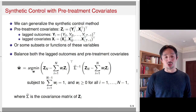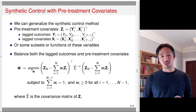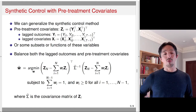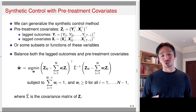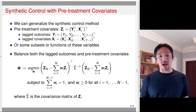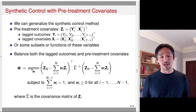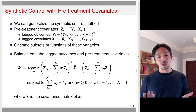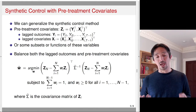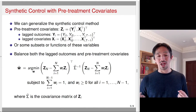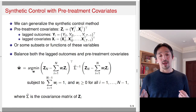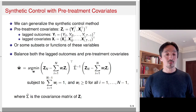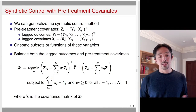We can try to balance both the lagged outcomes and the pre-treatment covariates in the following way. The weights will minimize the distance between the z vector for unit n, the treated unit, and the weighted average of z vectors for all control units — note the summation should go up to n minus 1. We divide by sigma hat, the covariance matrix of z_i, to standardize the variables. This gives a distance measure between z_n and the weighted average of the control units' z. So not only can we balance lagged outcomes, we can also balance lagged covariates.